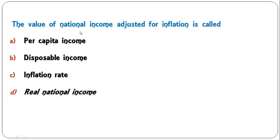National income estimation is the responsibility of: NSSO (National Sample Survey Organization), CSO (Central Statistical Organization), Finance Ministry, or National Income Committee? The correct answer is CSO. It is the Central Statistical Organization that is responsible for national income estimation. B is the correct answer.